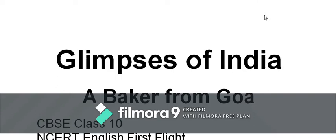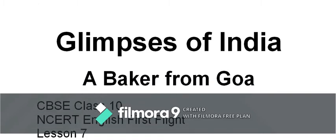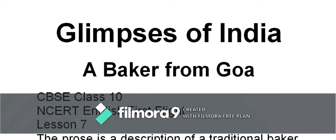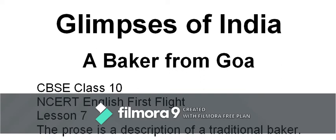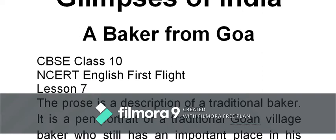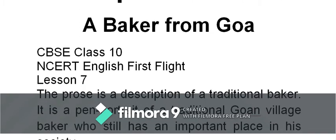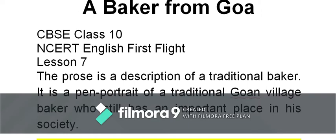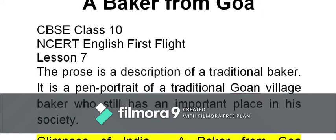Hello and welcome, dear students. Today we are going to begin with the literature topic 'Glimpses of India.' There are three sub-topics in that; the first one is 'A Baker from Goa.' It is from your NCERT published textbook 'First Flight,' the CBSE prescribed book for Grade 10, Lesson Number Seven. Before we begin, I request you to write down the learning objective: to identify the main idea and details, and get ready with your KWL chart — what I know, what I want to know, and what I have learned.